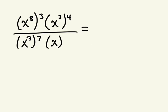We have x to the power of 8 to the power of 3, times x to the power of 2 to the power of 4, divided by x to the power of 3 to the power of 7 times x to the power of 1. First, we simplify power of a power: 8 times 3 gives x to the power of 24.